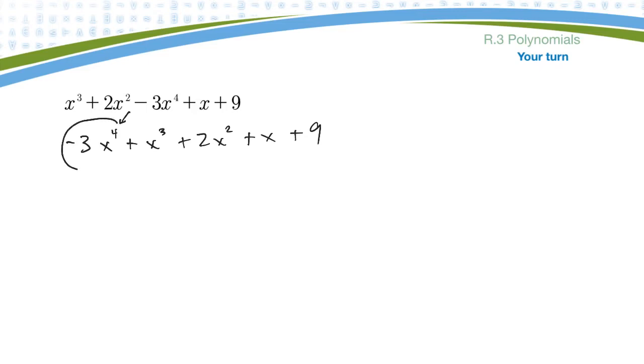The leading term, we often call this one the leading term, would be minus 3x to the 4th. The number out front, we used to call that the literal coefficient, not literal, the numerical coefficient. And this we used to call the literal coefficient, but now we just refer to this as the coefficient out front. Okay, and then here's a term, there's a term, there's a term, and there's a term.